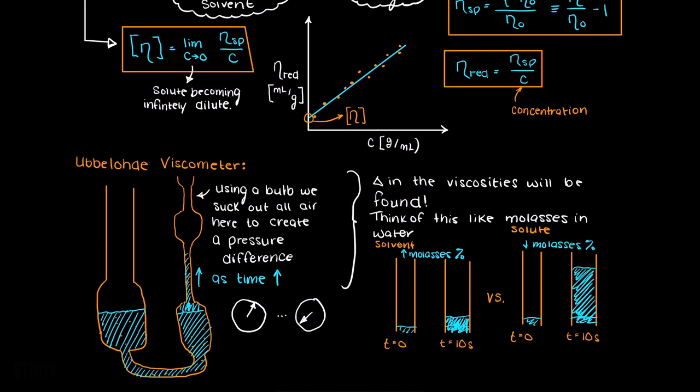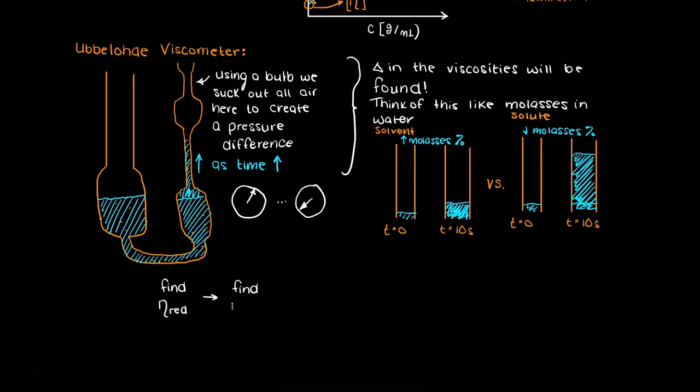After we are finished testing at different concentrations, we have determined our solutions and solvents reduced viscosities, and through these equations we discussed earlier, you can find the intrinsic viscosity of the solute. However, how do we still find the molecular weight?